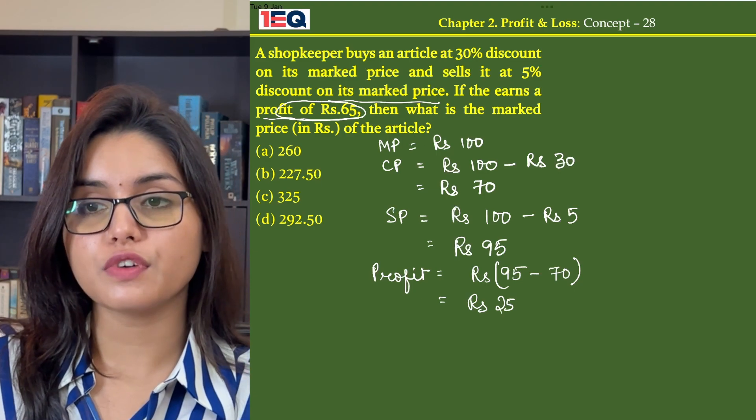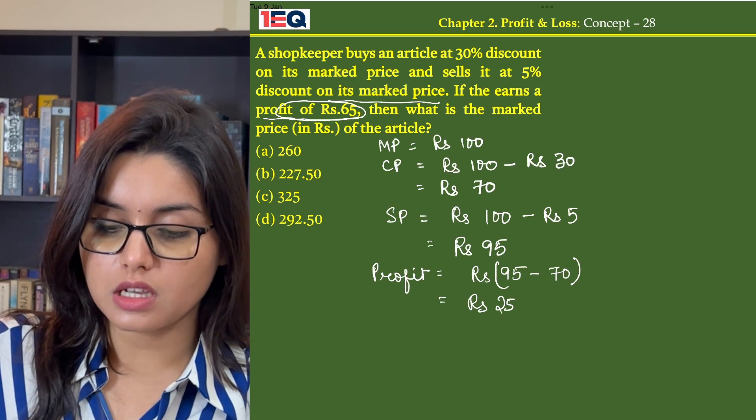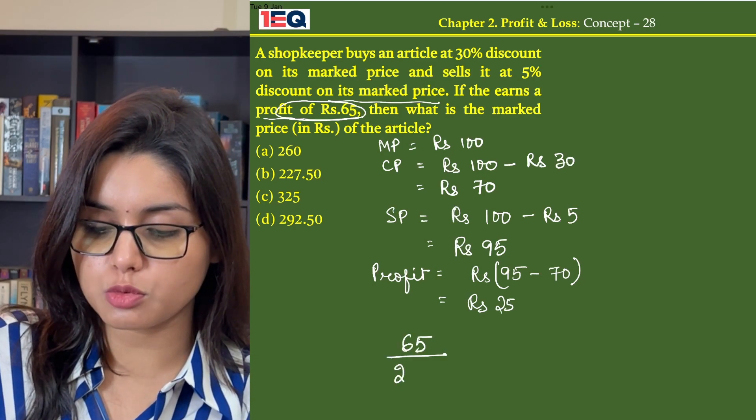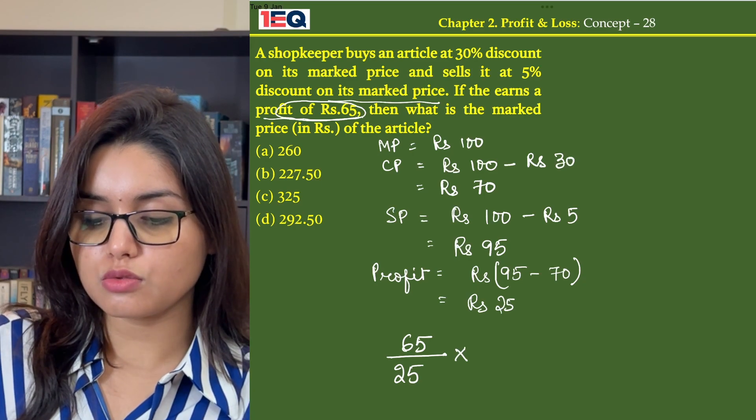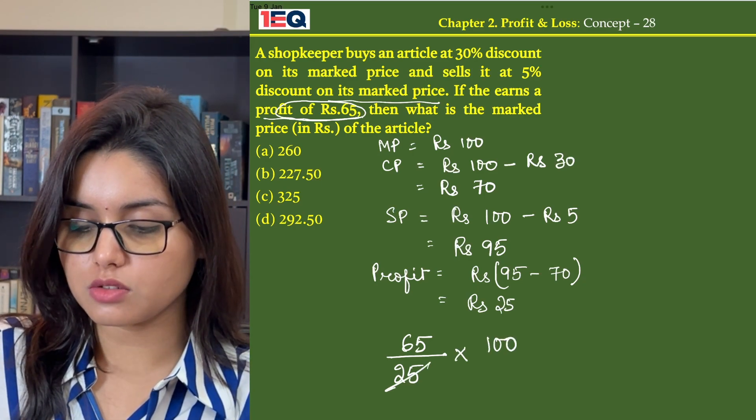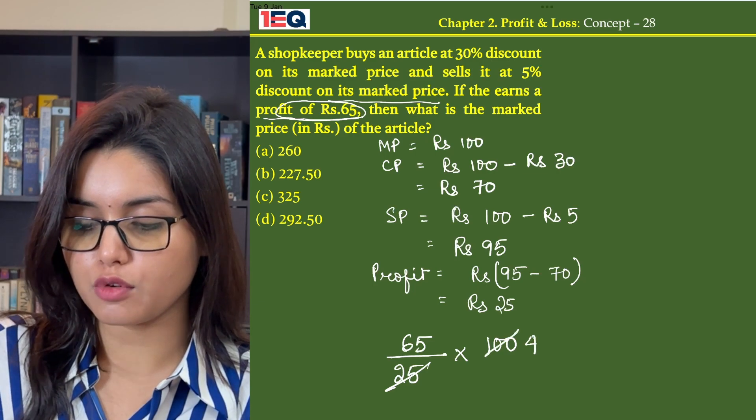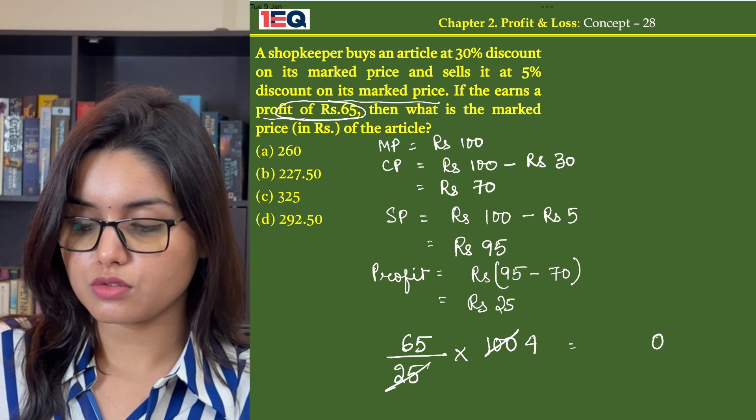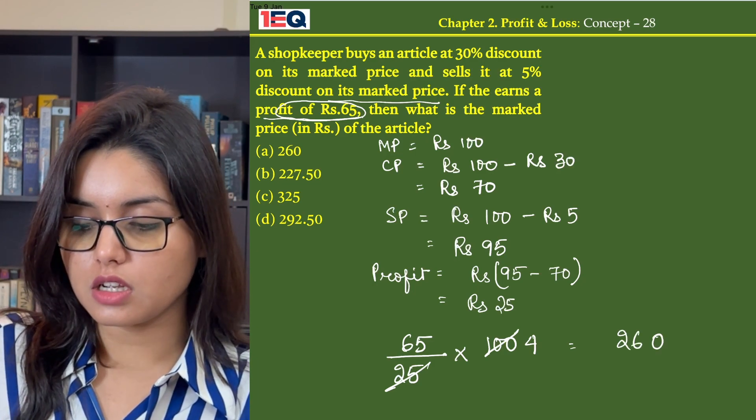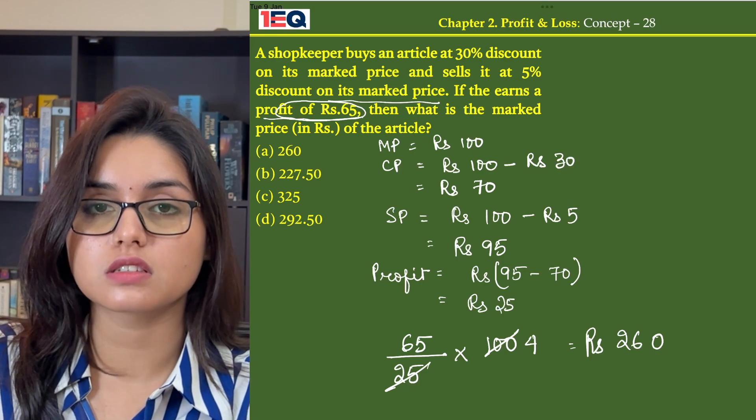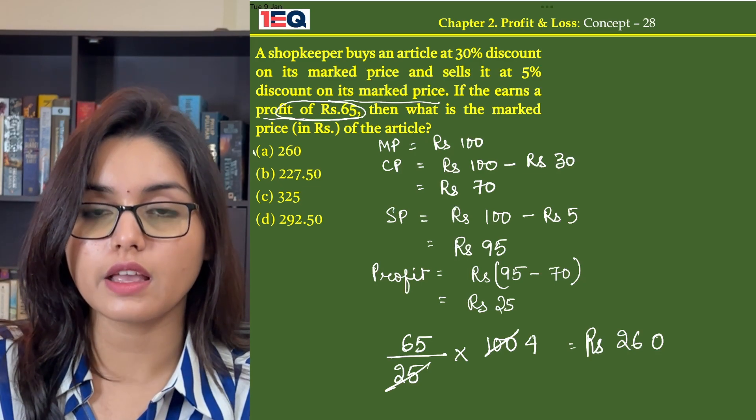So in order to find the marked price, we will put the actual profit he earned divided by our assumed profit into the assumed marked price. So on dividing 65 by 25, we get 2.6, and multiplying by 100 gives us 260. So the marked price of the article is Rs. 260, that is option A.